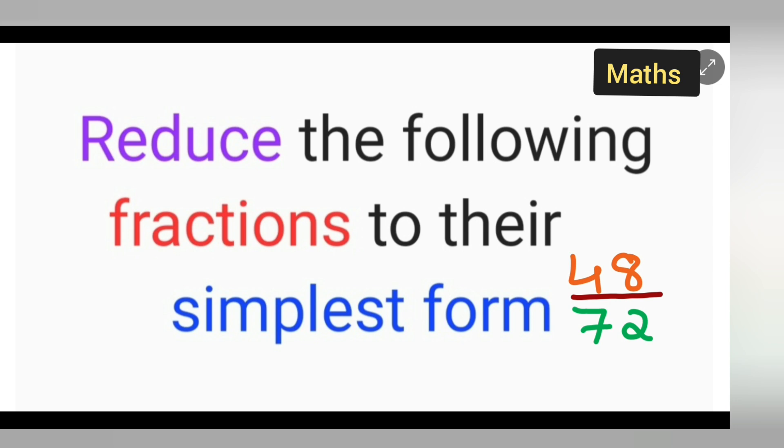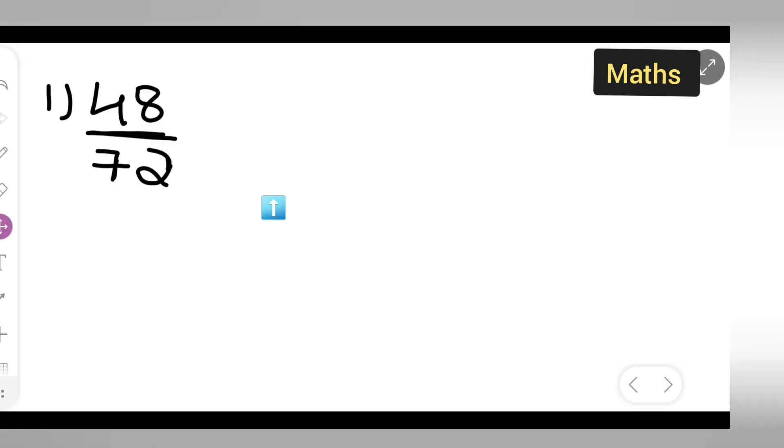Reduce the following fractions to their simplest form that is 48 upon 72. So, this fraction 48 upon 72 we have to reduce this in the simplest form. So, how we are going to do this? Let me use some other pen for the solution, okay? So, that you will understand it better.